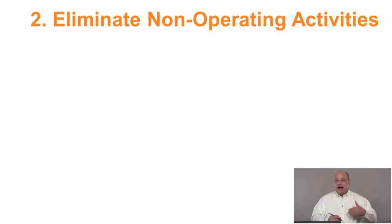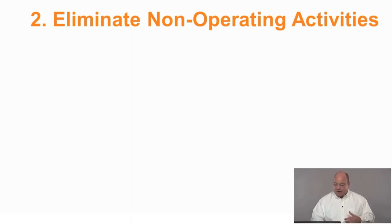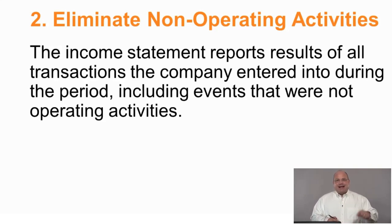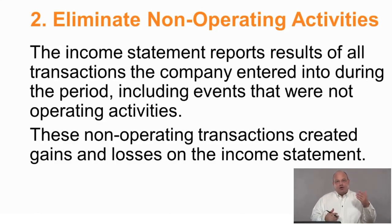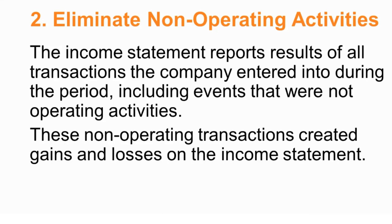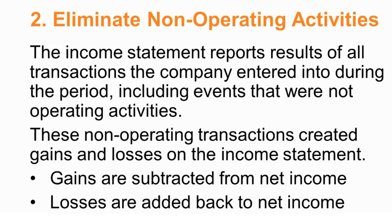The second step is to eliminate non-operating activities that are included in the income statement. The income statement includes almost all transactions, so we have some activities that were not operating activities appearing there. If we're going to adjust the income statement to reflect operating activities, we need to remove those non-operating items. Any gains are subtracted from net income and losses are added back. Those events will be recorded in the investing section, possibly the financing section — for example, cash received from the sale of fixed assets.